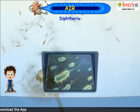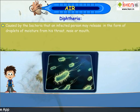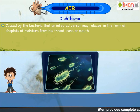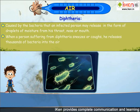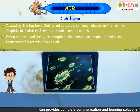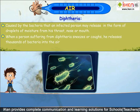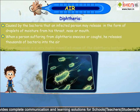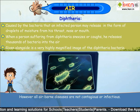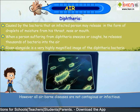Diphtheria is caused by bacteria that an infected person may release in the form of droplets of moisture from his throat, nose or mouth. When a person suffering from diphtheria sneezes or coughs, he releases thousands of bacteria into the air. However, all airborne diseases are not contagious or infectious.